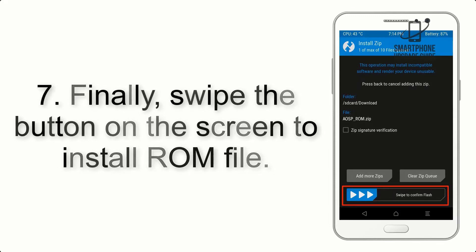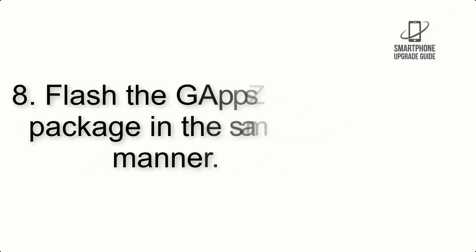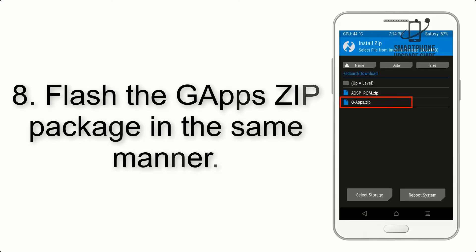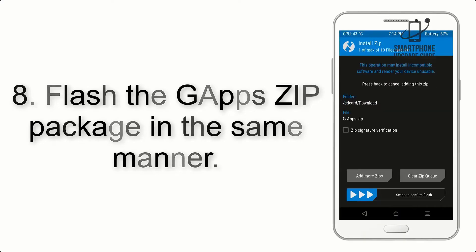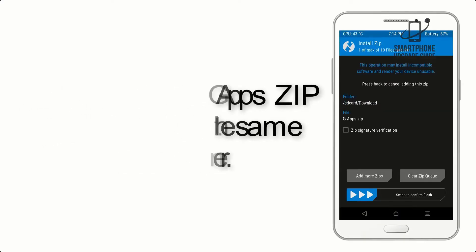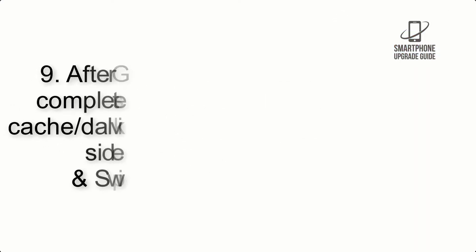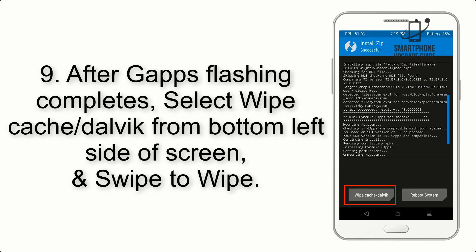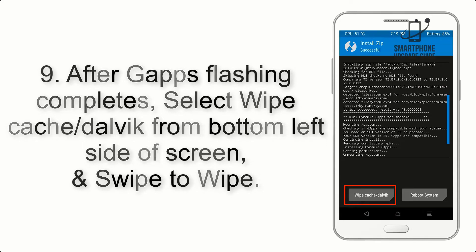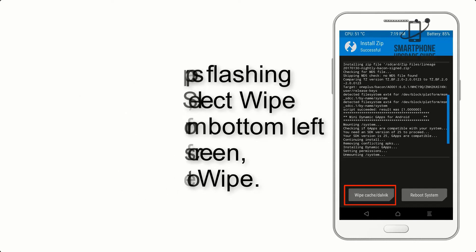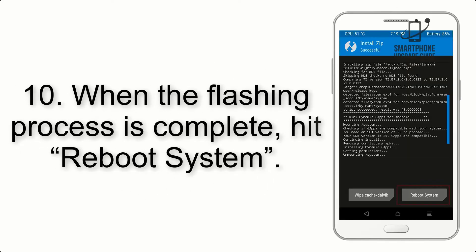Step 7: Swipe the button on screen to install the ROM file. Step 8: Flash the GApps zip package in the same manner. Step 9: After GApps flashing completes, select Wipe Cache and Dalvik from the bottom left side of the screen and swipe to wipe.